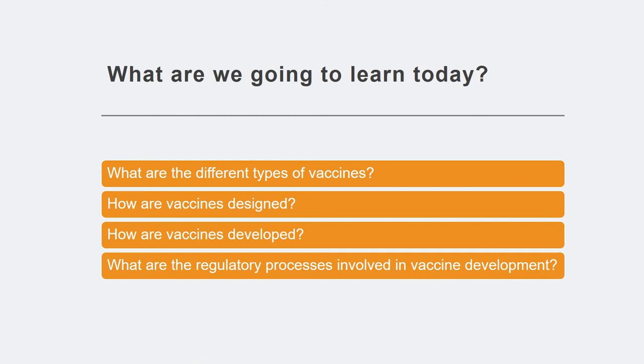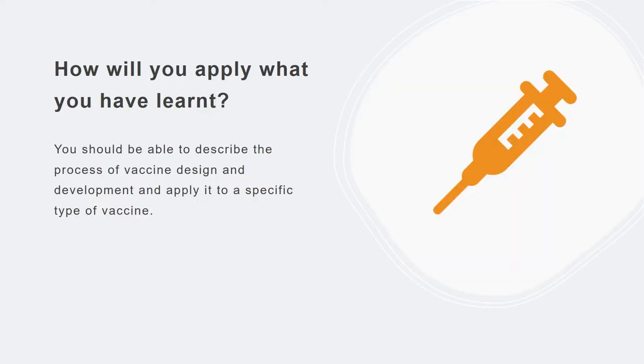In today's lecture, we will be learning about the different types of vaccines, how vaccines are designed, and the developmental procedure as well as the regulatory processes involved in vaccine development. Upon completion of this lecture, you should be able to describe the process of vaccine design and development and apply it to a specific type of vaccine.